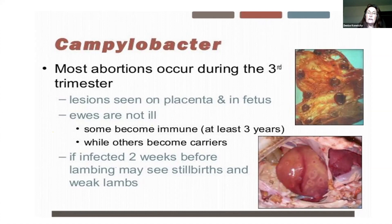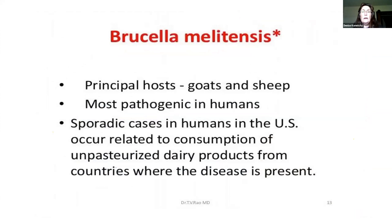Campylobacter is also a zoonotic disease — humans can be infected. It can cause severe gastrointestinal issues in humans, and depending on which organism they are infected with, it can also cause abortion issues in pregnant women. The hallmark for prevention of Campylobacter is vaccinating if this gets diagnosed in your flock or herd.